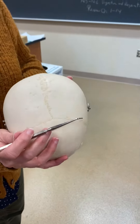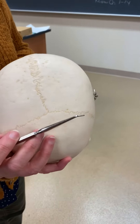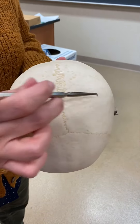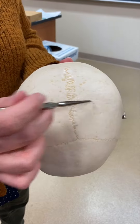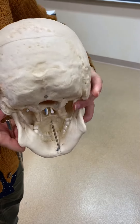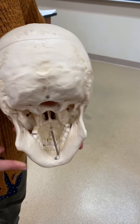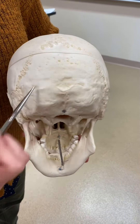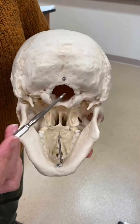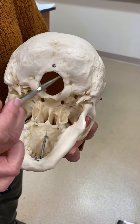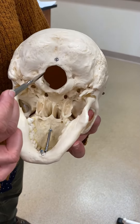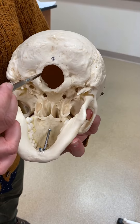On the top you have the parietal bones; there are two in the back. This is the occipital bone, and the opening is the foramen magnum.